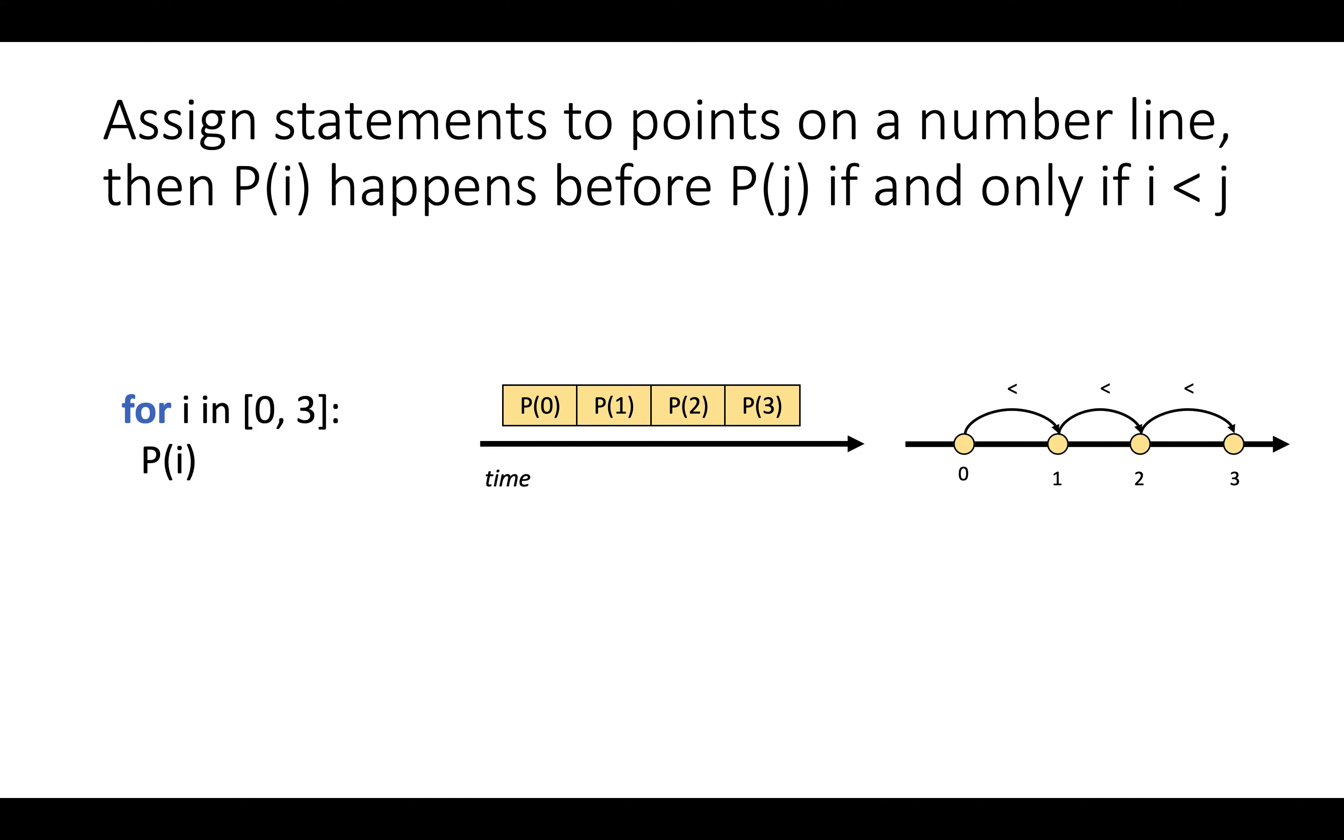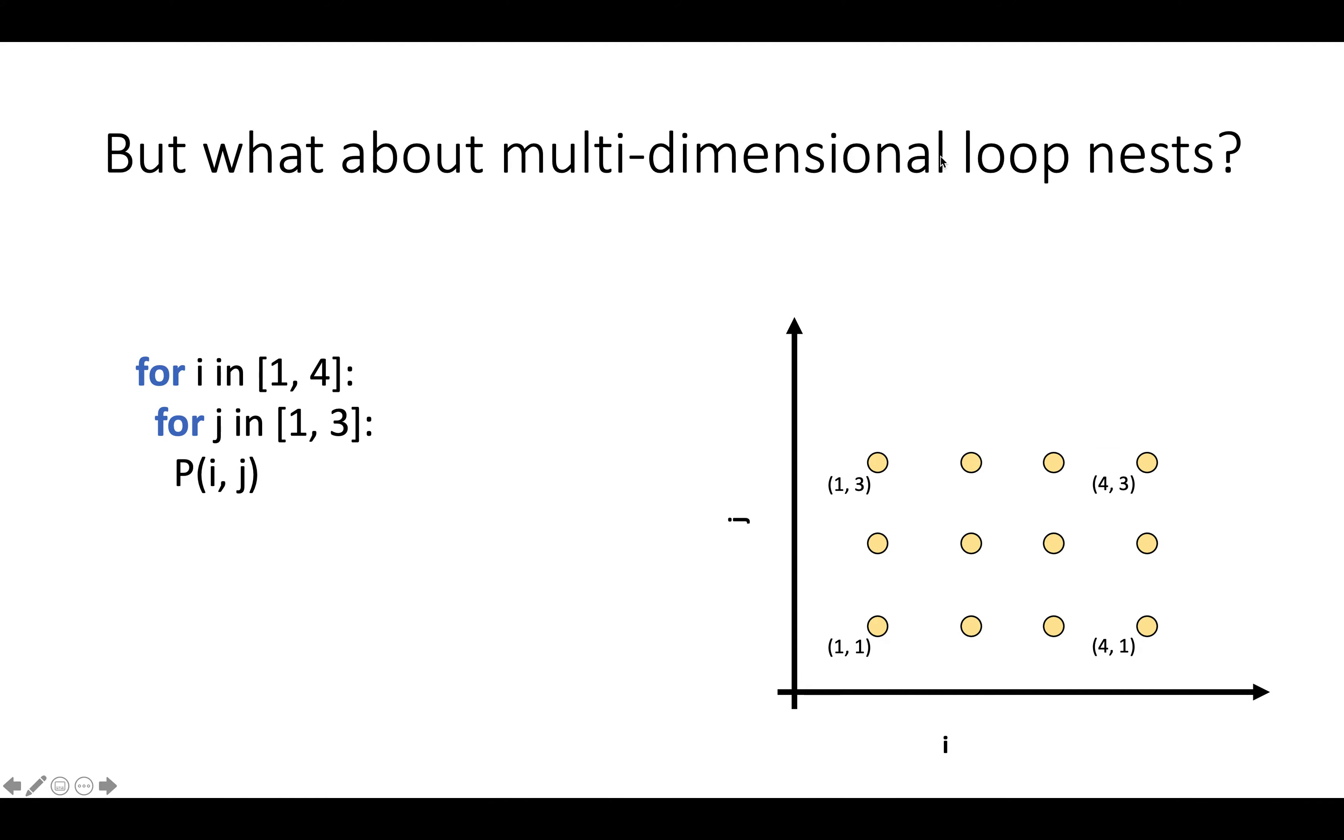And that's so obvious that it's almost confusing to spell it out, but it's an important thing to say explicitly, because when we get to multidimensional loop nests, the situation gets a little more complicated.